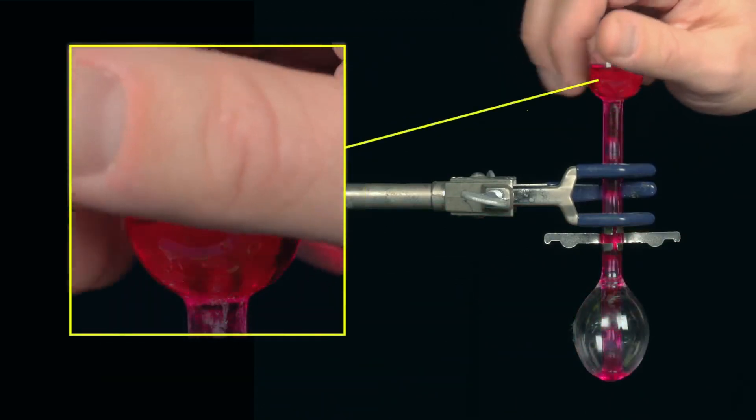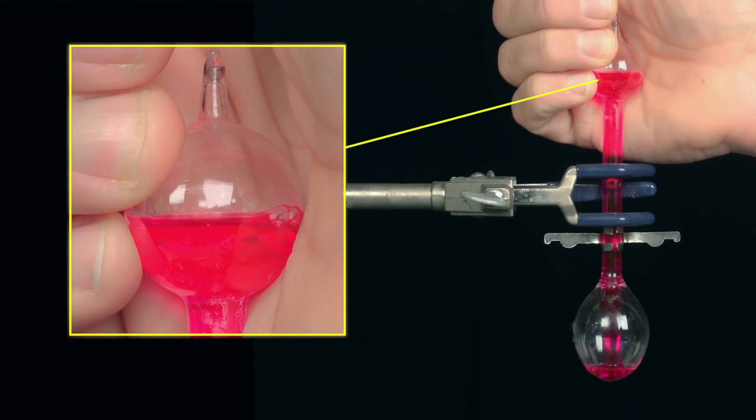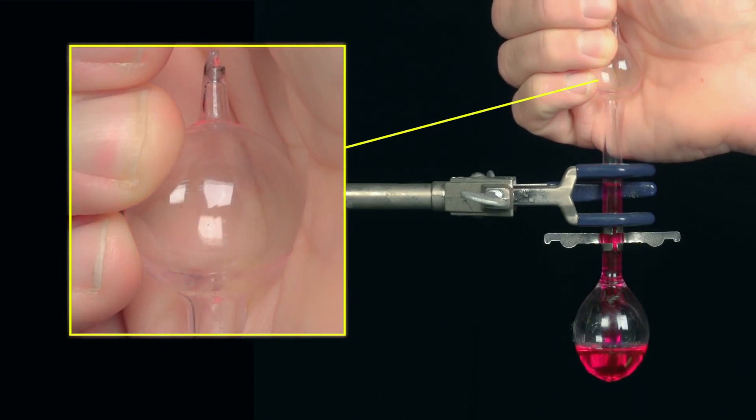Now watch as I place my hand around the head. Heat from my hand converts liquid to vapor, which increases the pressure and forces the liquid back to the base.